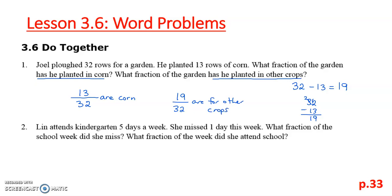For number two, Lynn attends kindergarten five days a week. She missed one day this week. What fraction of the school week did she miss? What fraction of the week did she attend school? So here we know the week is a total of five days. She missed one day, so one-fifth was missed. And then what was there is, of course, the five days take away the one day that she missed. So four out of the five days she attended.